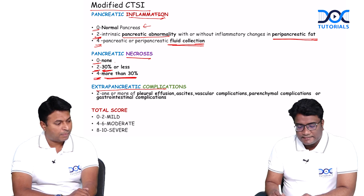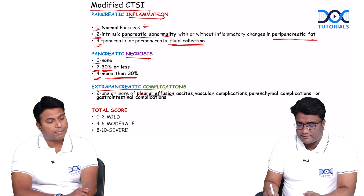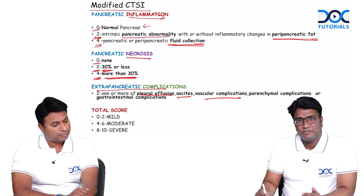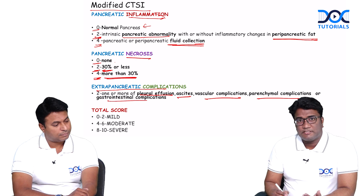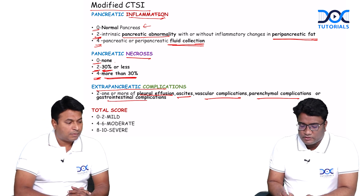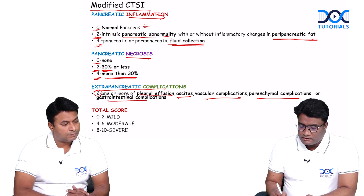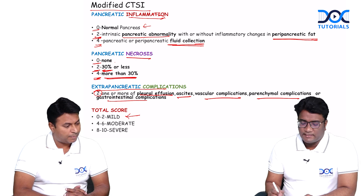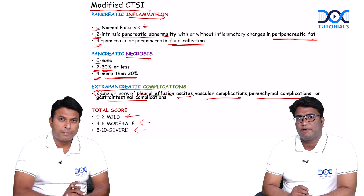If there are any extra-pancreatic complications — such as pleural effusion as seen in our case, ascites, vascular complications, parenchymal or gastrointestinal complications, or even bowel ischemia and perforations which can develop in pancreatitis — we give a score of two. Summing the total score: zero to two is mild pancreatitis, four to six is moderate, and eight to ten is severe pancreatitis.